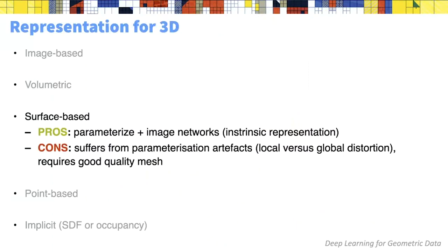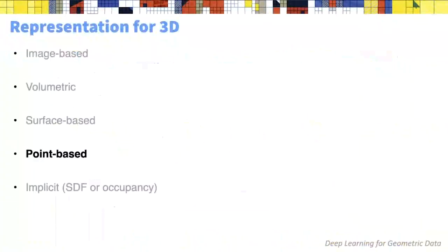To recap surface-based methods: we have seen the advantage of using or learning a parameterization, or working directly on edge-based data structures for surface processing. The difficulty with parameterization approaches is inheriting the challenges and shortcomings of parameterizations, which is unavoidable unless mesh quality is very good. We now move to point-based networks.